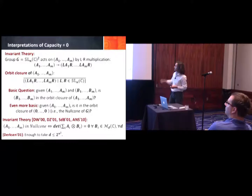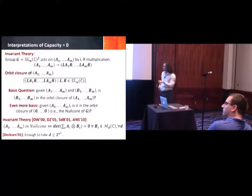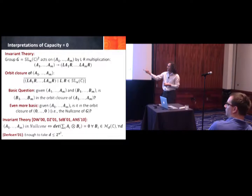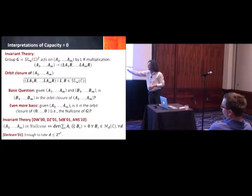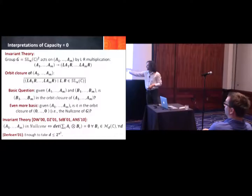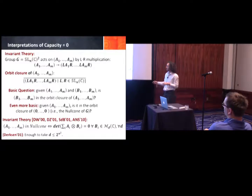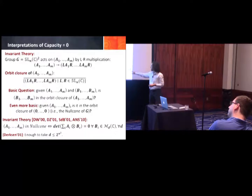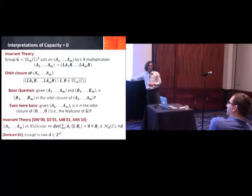In invariant theory, results of Derksen and others show that the tuple Aᵢ is in the null cone — equivalently, Σ AᵢXᵢ is singular — if and only if det(Σ Aᵢ ⊗ Bᵢ) = 0 for all matrices Bᵢ. Crucially, a deep result of Derksen in 2001 showed it is enough to test matrices Bᵢ of dimension D exponential in N. So to test whether the operator is rank non-decreasing, you only need to tensor it with matrices of exponential size.